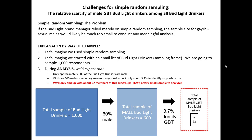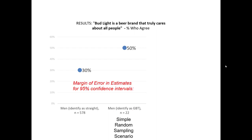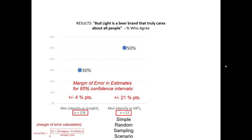That's a very small sample in terms of analysis. Let's imagine we asked the survey question, 'Bud Light is a beer brand that truly cares about all people,' on a 5-point Likert scale, and simply measured those who agreed or strongly agreed. 30% of all men who identified as straight agreed, and 50% of individuals who identified as GBT agreed. At first it seems like there's a substantial difference. But with only 22 individuals in this subgroup, when we calculate our margin of error at a 95% confidence interval, we see that for men who identify as straight, our margin of error is only 4 percentage points. However, for this much smaller GBT male sample, our margin of error is 21 percentage points.